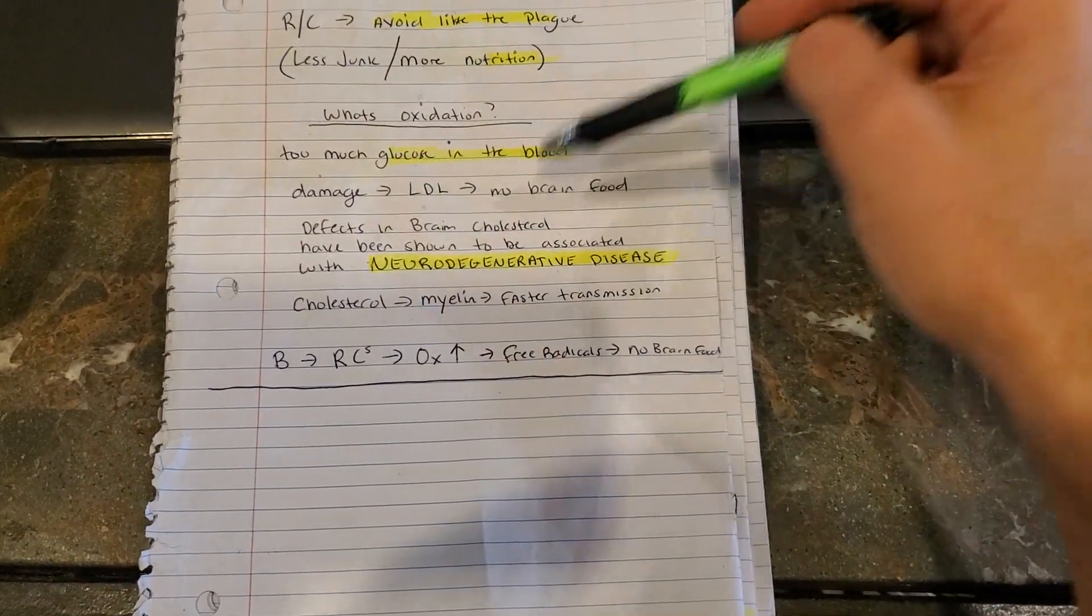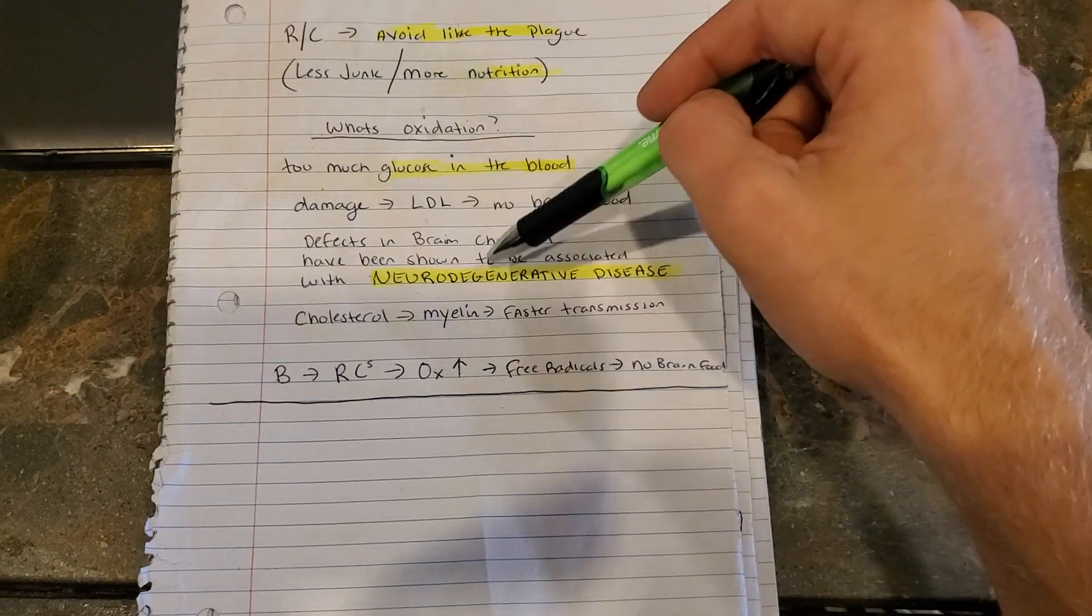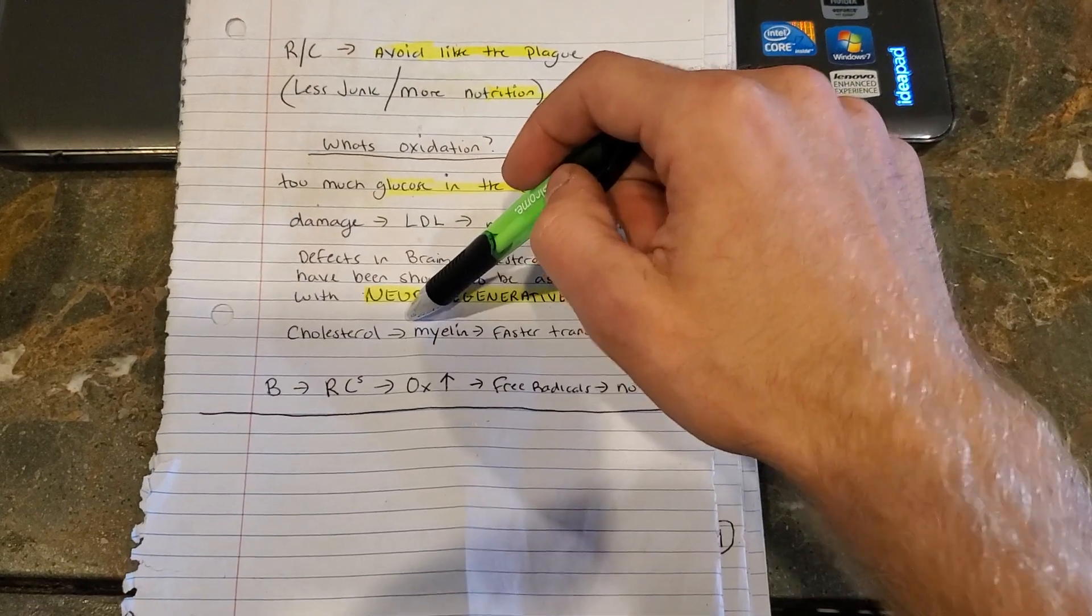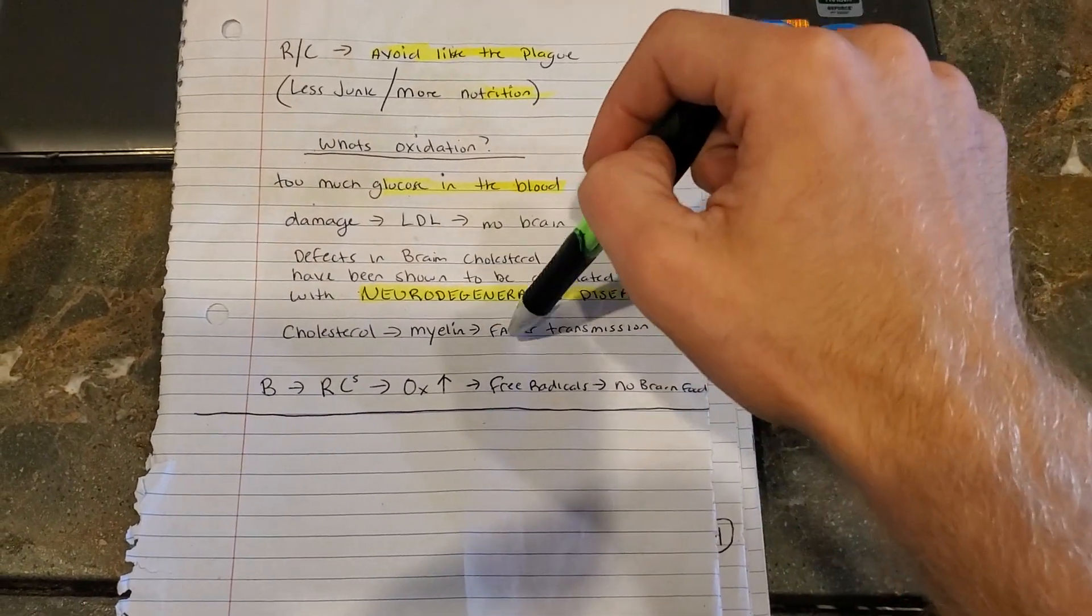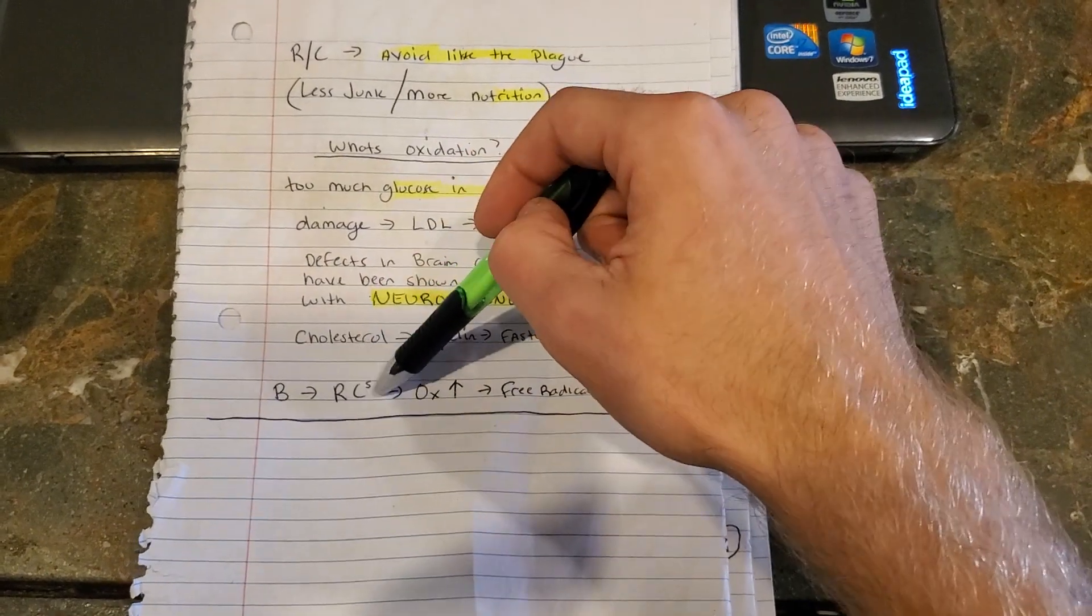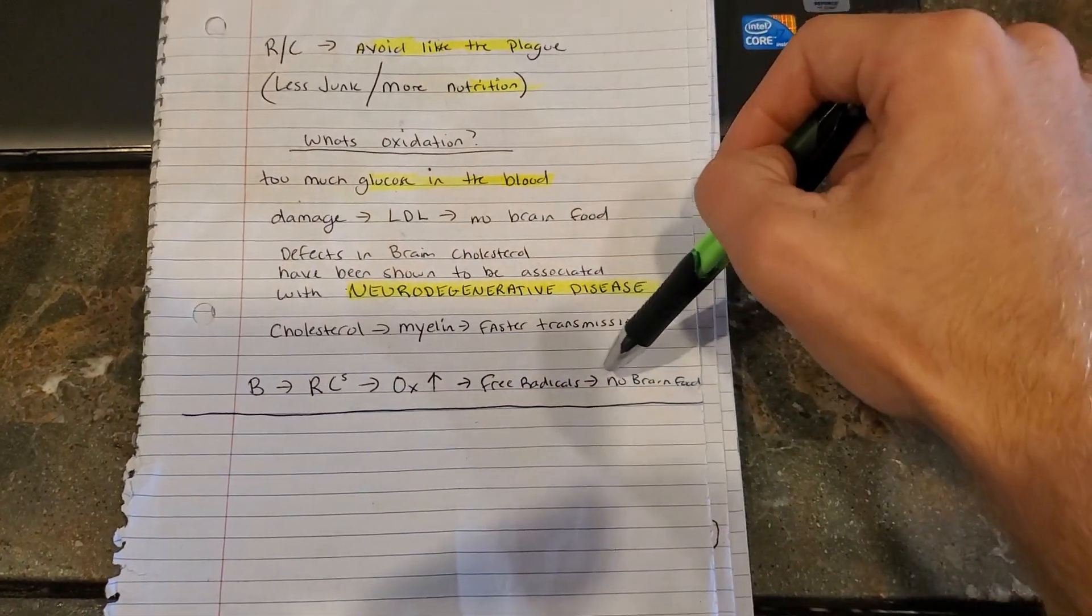So low levels of cholesterol, such as statins and other medications that decrease it, they really screw you up. So cholesterol helps your myelin sheaths develop, which is faster transmission in your brain. And who doesn't want a faster brain? So breakfast, refined carbs, oxidative stress, free radicals, and no brain food.